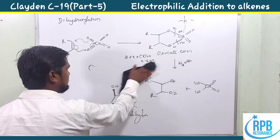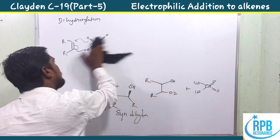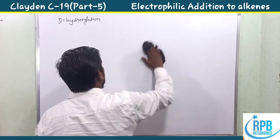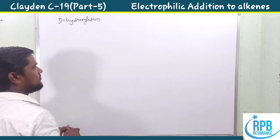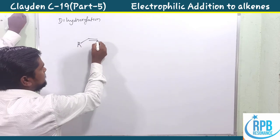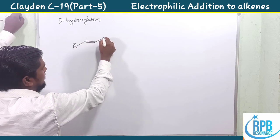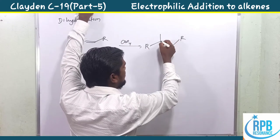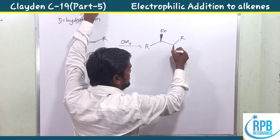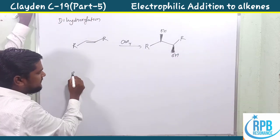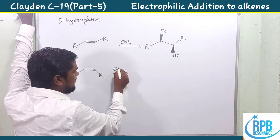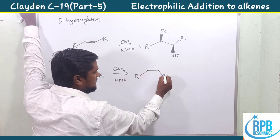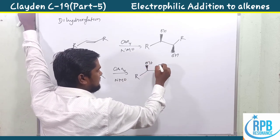Let's discuss simple examples of osmium tetroxide reactions. A trans compound treated with osmium tetroxide gives the syn dihydroxyl product with OH groups added. In the case of a cis compound treated with osmium tetroxide in the presence of NMO, we also get the dihydroxyl product.